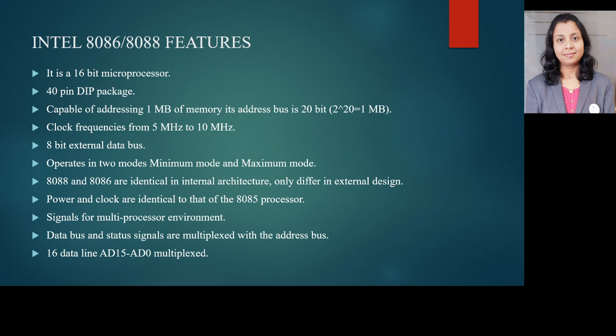It operates in 2 modes: minimum mode and maximum mode. The 8088 and 8086 are identical in internal architecture, but the difference is only in external design. Power and clock are identical to that of the 8085 processor, with signals for multiprocessor environment. Data bus and status signals are multiplexed with the address bus to increase the memory capacity. The 16 data lines, AD15 to AD0, are multiplexed.